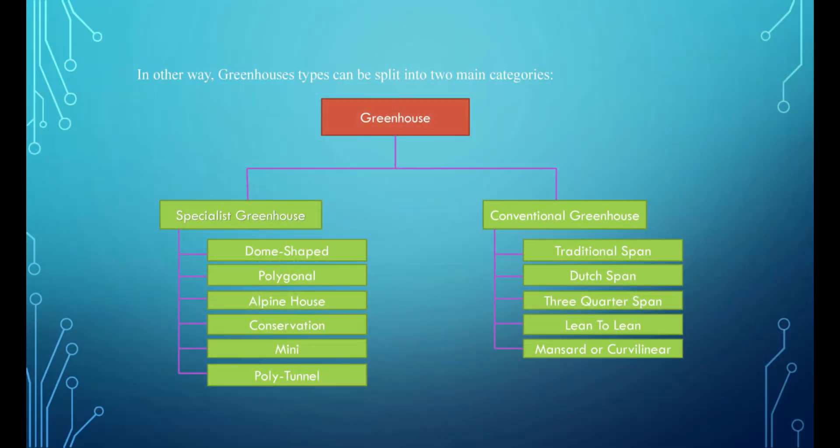In another way, greenhouse types can be split into two main categories. The first is the Specialist greenhouse, which is further divided into: Dome-shaped, Polygonal, Alpine house, Conservation, and Mini. The other category is the Conventional greenhouse, which is further divided into: Traditional span, Dutch span, Three-quarters span, Lean-to, and Mansard or Kerveliner.